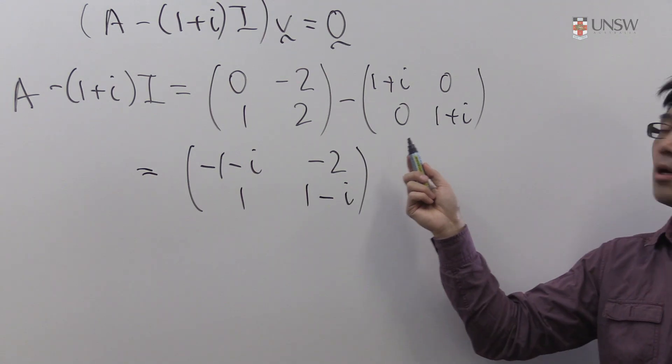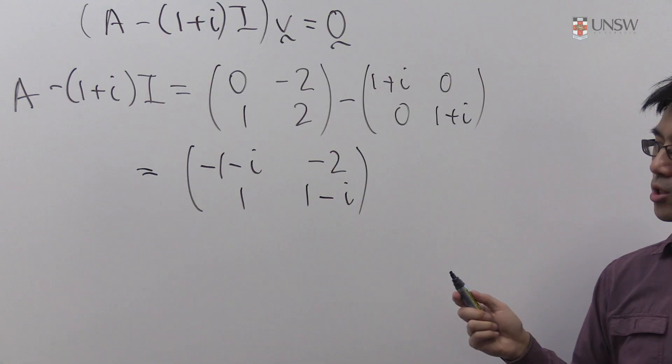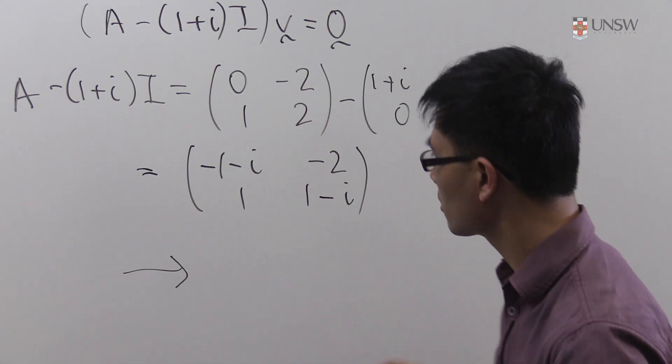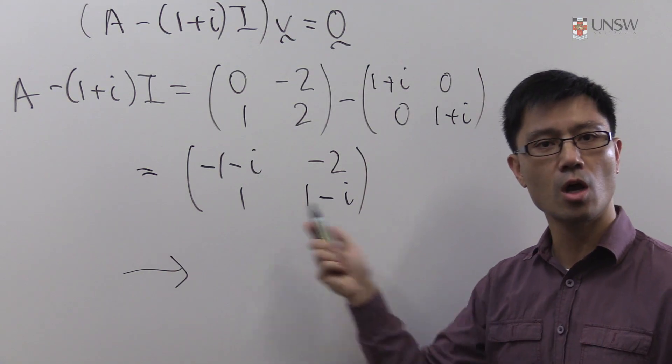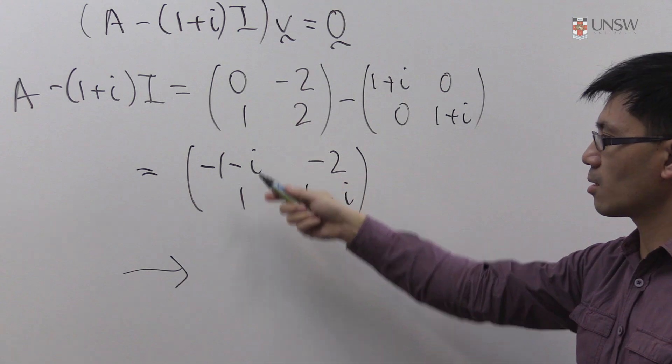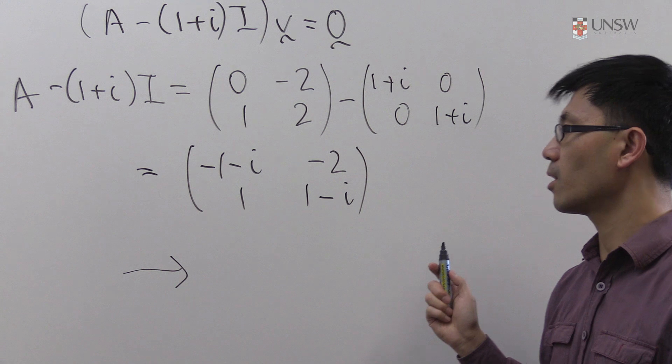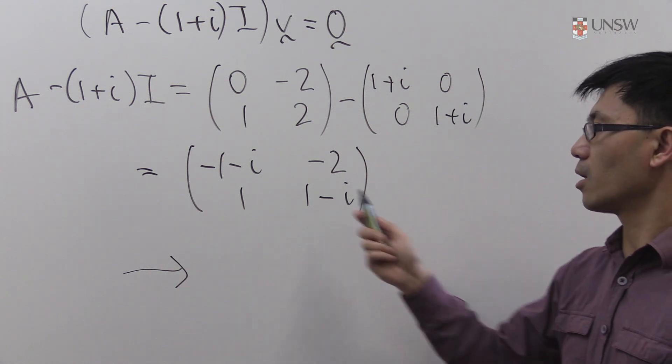Now we want to solve the homogeneous equation corresponding to this coefficient matrix, so we just use Gaussian elimination. Now, usually when you do Gaussian elimination, you start with the first row, you see a leading entry and you clear this term. But in this case, it's a simple 2 by 2 matrix, so what we'll do is we'll clear the first row instead. That just makes the calculations a little bit easier.